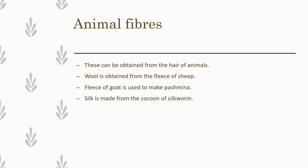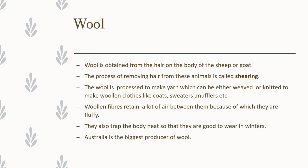First, animal fibers. Animal fibers can be obtained from the hair of animals. Wool is obtained from the fleece of sheep, and fleece of goat is also used to make wool, which is called pashmina. Silk is made from the cocoon of silkworm.